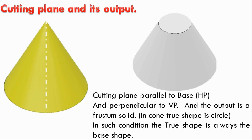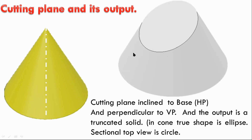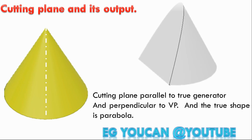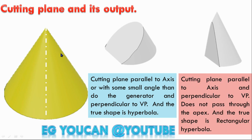If you cut the object parallel to the base, the true shape is a circle. If you cut the cone and make the cutting plane inclined to the axis — not parallel to the generator — cutting both left and right generators, you get an ellipse. If you cut a parabola, the cutting plane is parallel to one generator — that gives a parabola. If you cut a hyperbola, the cutting plane is parallel to the axis with a smaller angle than the generator, parallel to the VP — the true shape is a hyperbola.